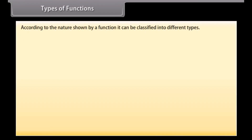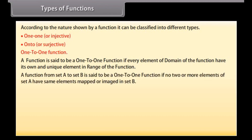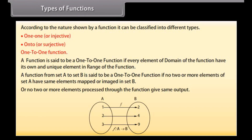Types of functions: According to the nature shown by a function, it can be classified into different types: one-to-one or injective, onto or surjective. A function is said to be a one-to-one function if every element of the domain of the function has its own unique element in the range. A function from set A to set B is said to be a one-to-one function if no two or more elements of set A have the same element mapped in set B.